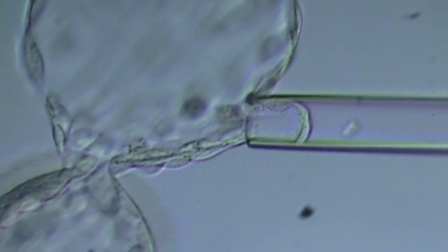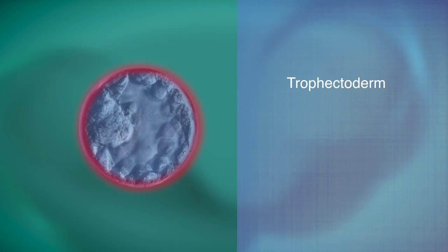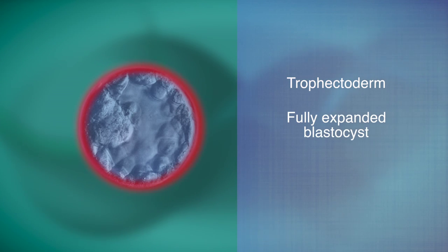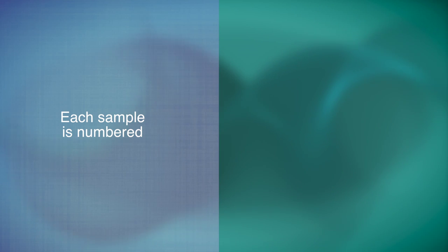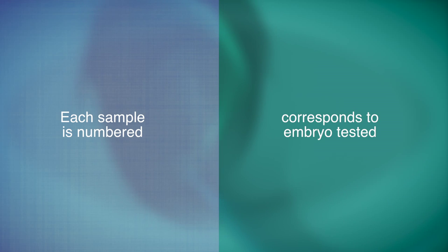A few cells are extracted from the trophectoderm, the outer portion of the fully expanded blastocyst, which is either day 5 or day 6 of embryonic development. Each sample is numbered and corresponds to the embryo from which it was taken.